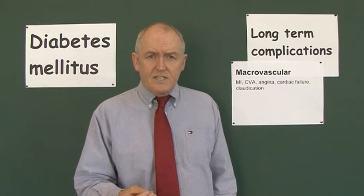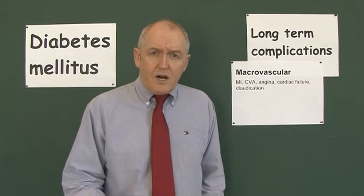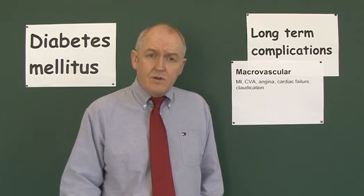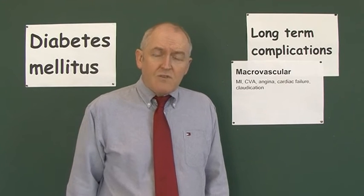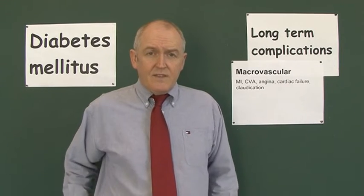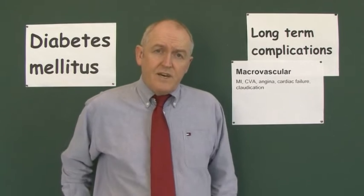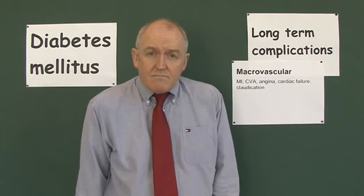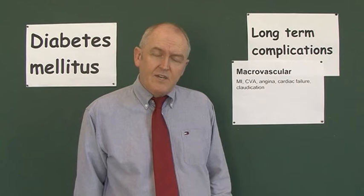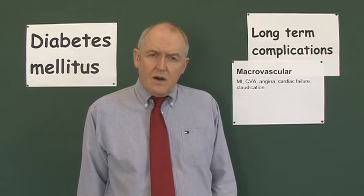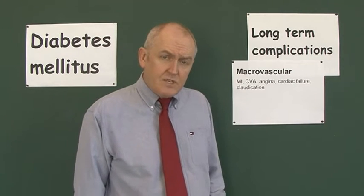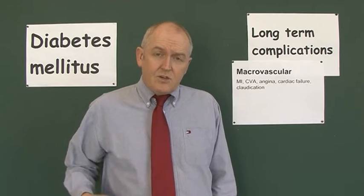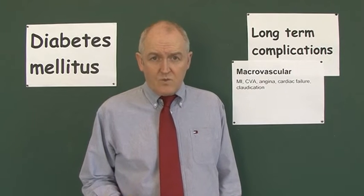Macrovascular disease can lead to myocardial infarction or any form of acute coronary syndrome. Cerebrovascular accidents can occur when there's atheroma in the blood vessels supplying the brain. Angina — stable angina — is a complication of coronary arterial atherosclerosis, and cardiac failure is a complication of ischemic heart disease as well.